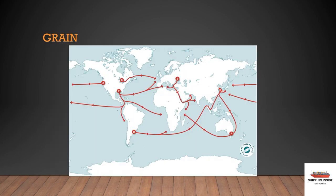Grain. Most grains traded in bulk are destined for human or animal consumption. They include wheat, sorghum, soya, rice, and seeds of crops such as rape, sunflower, flax, and cotton. The main grain exporters are the United States, France, Russia, Ukraine, Argentina, Brazil, Canada, and Australia.